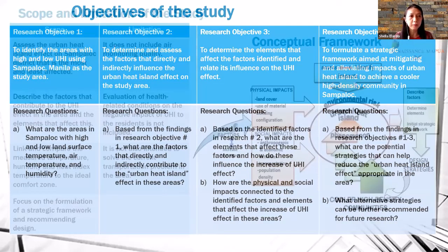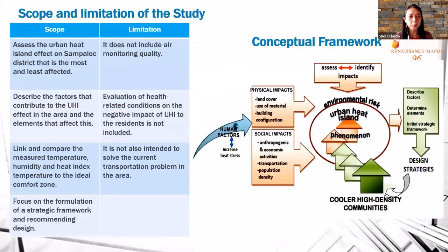For the scope and limitations, the study assesses the urban heat island effect on Sampaloc district, describing the most and least affected areas, and the factors that contribute to UHI and their elements. It links and compares measured temperature, humidity, and heat index to the ideal comfort zone, and focuses on formulating a strategic framework. It does not include air quality monitoring, evaluation of health-related conditions, or transportation problems in the area.